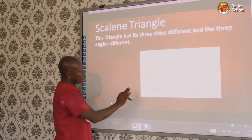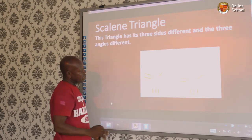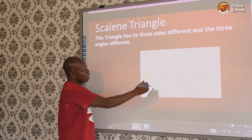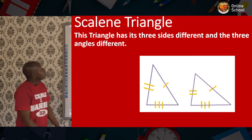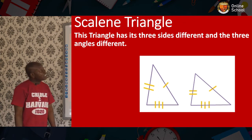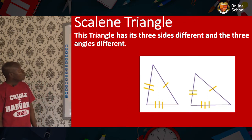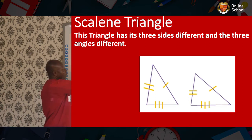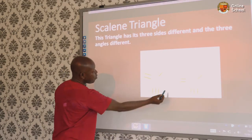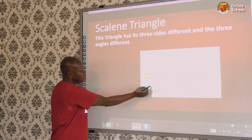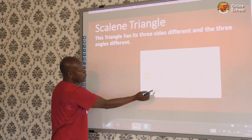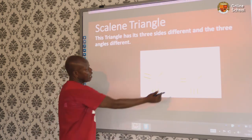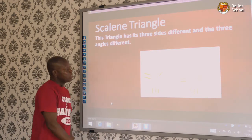The scalene triangle has all three sides different from one another, and all three angles are different as well. Whatever measurement you have on one side is different from the other two. The tick marks — one, two, and three — show that all sides are unequal, and the same applies to the angles.